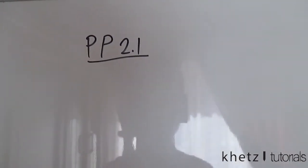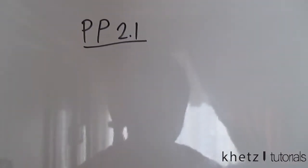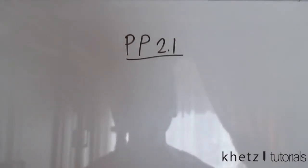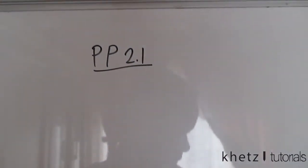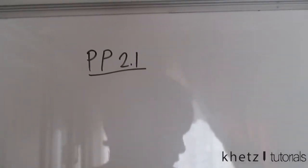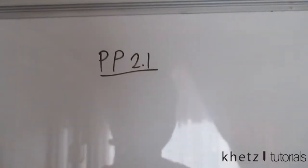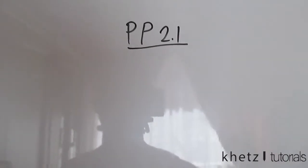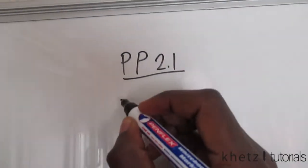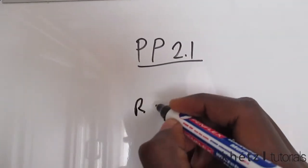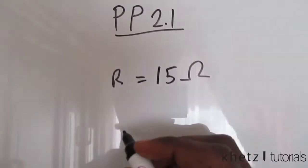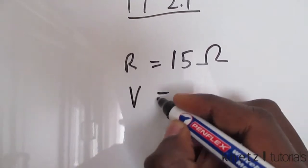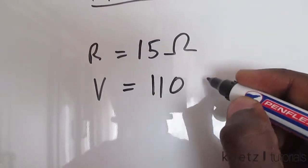Welcome back to Khetz tutorials. In this video, we're going to be covering practice problem 2.1. The question says: How much current is drawn by a toaster with resistance of 15 ohms at 110 volts?